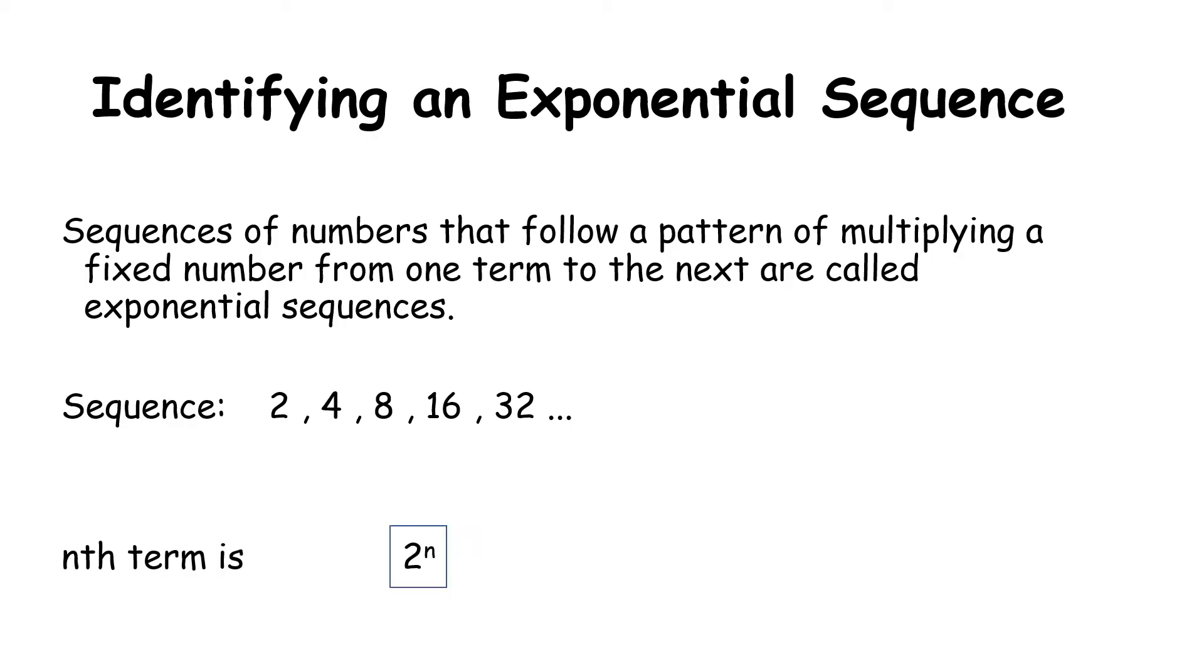So this is an exponential sequence which is written as 2 to the power of n, where 2 is coming from the fact that to get from 2 to 4, I'm multiplying by 2, multiplying by 2, multiplying by 2.